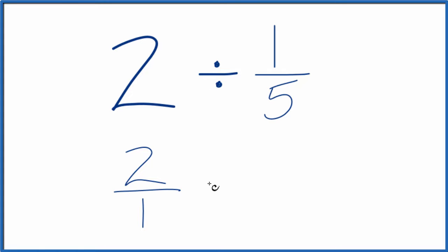And instead of division, we're going to multiply by the reciprocal of 1 fifth. We move the numerator down and the denominator up. So now we have 2 over 1 times 5 over 1.